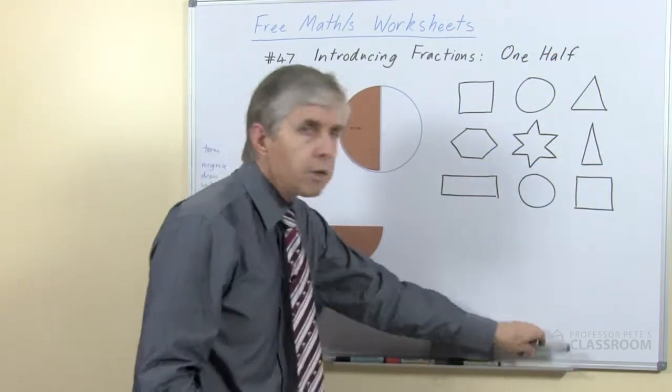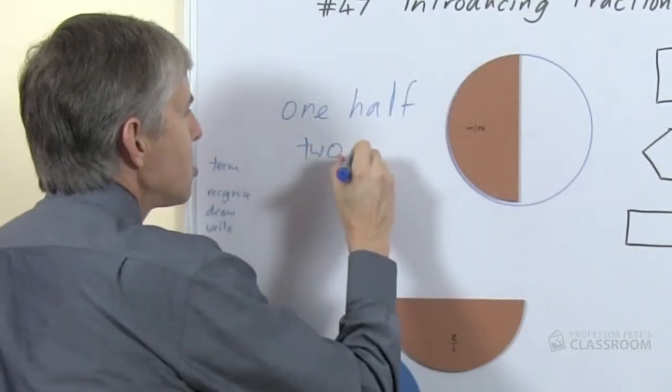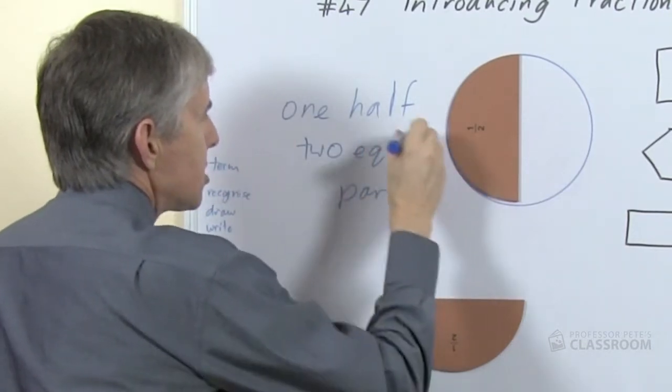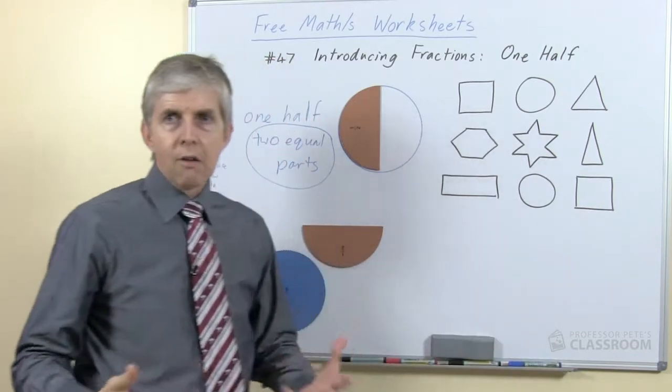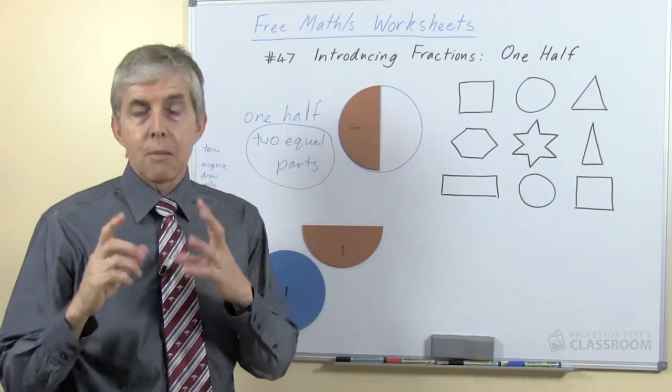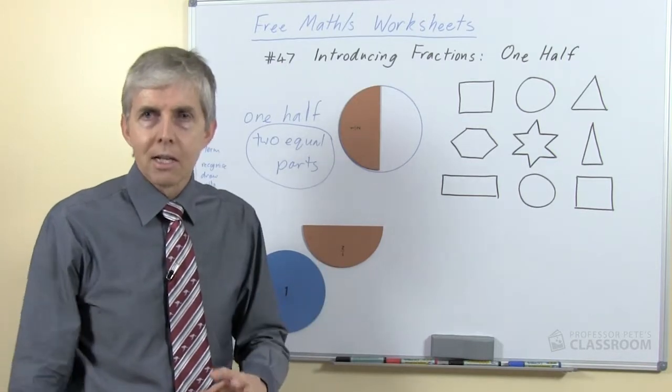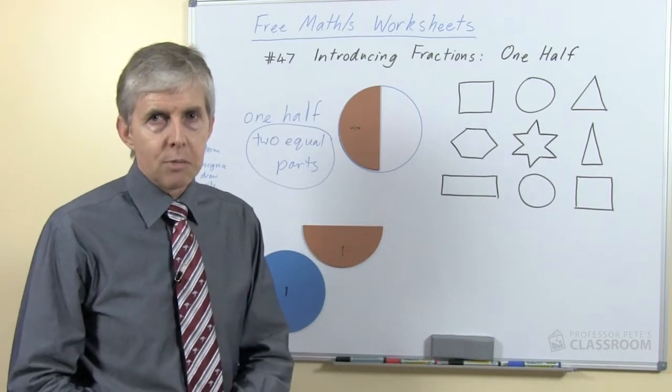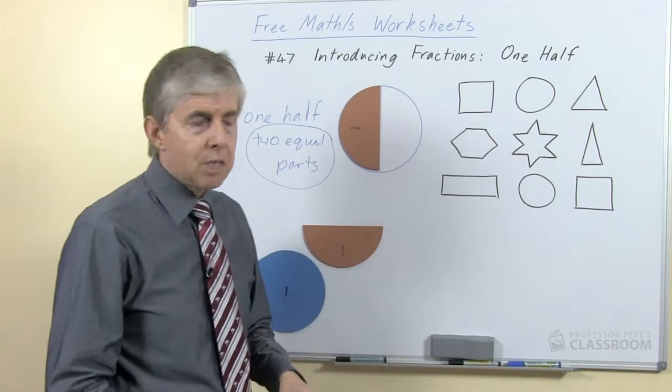The most important information that students need is that there are two equal parts. That's really the definition for deciding when we have halves and when we don't. They must be two and they must be equal—equal in size, not necessarily in shape, but generally speaking they will be the same shape because we're going to use common geometrical shapes.